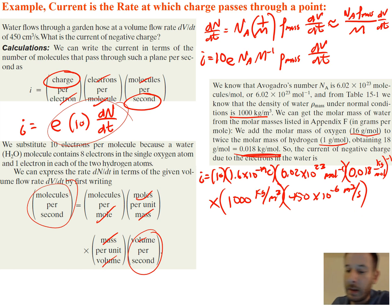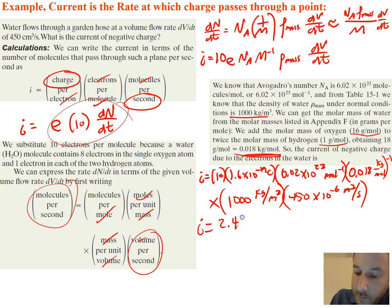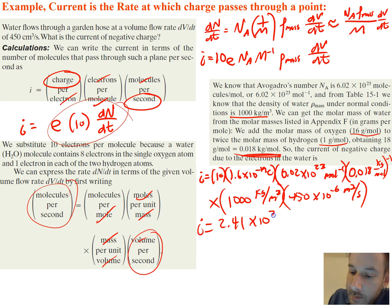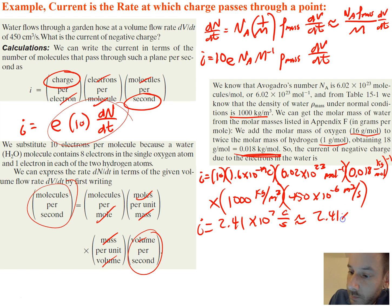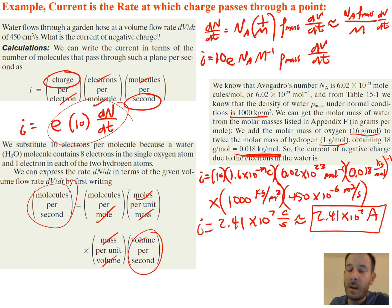That equals 2.41 × 10⁷ coulombs per second, or 2.41 × 10⁷ amperes. That's it for this lecture — we'll pick it up next time.